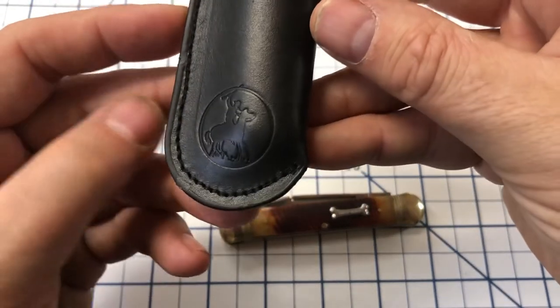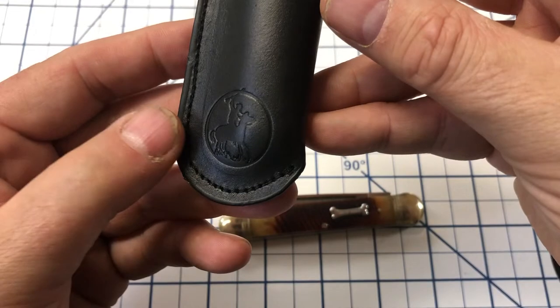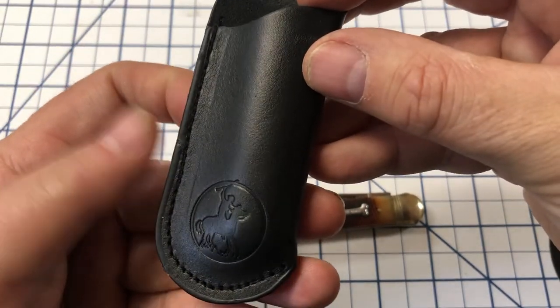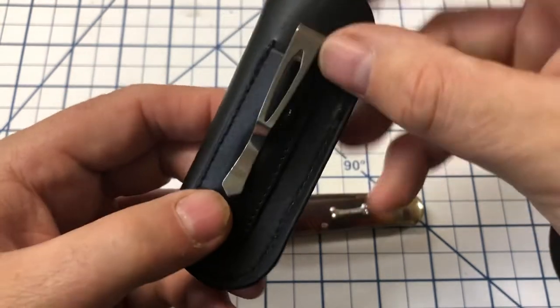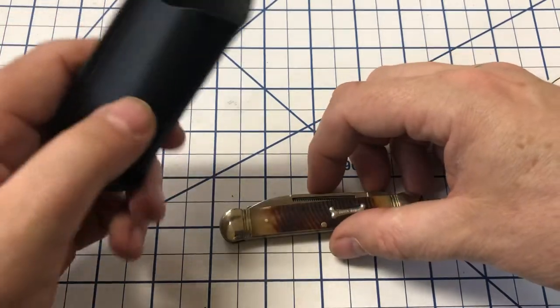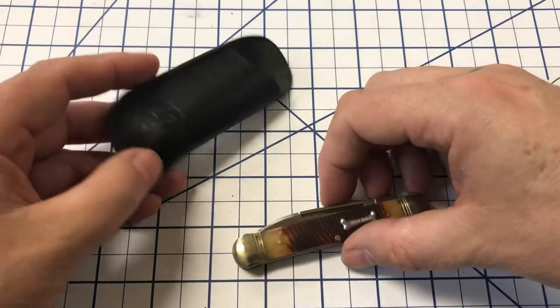It does have the little Rough Rider Teddy Roosevelt logo on there. Stitching not bad and then the little pocket clip. I don't know how well it will hold up over time, but at least you have it.